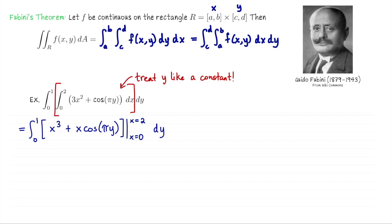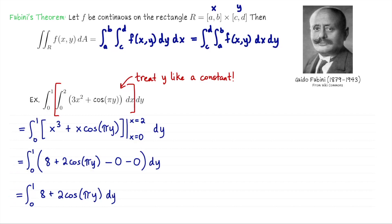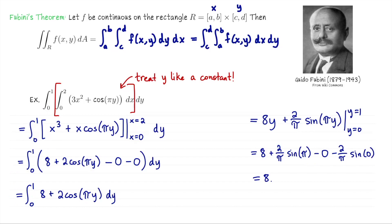Using the fundamental theorem of calculus, we plug in the top bound x = 2 and subtract plugging in the bottom bound x = 0. We get 2³ + 2·cos(πy) minus (0³ + 0·cos(πy)), leaving us with a single integral from 0 to 1 of (8 + 2cos(πy)) dy. The antiderivative with respect to y is 8y + (2/π)·sin(πy), evaluated from 0 to 1. Plugging in those bounds, we're left with 8.